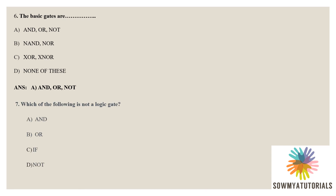Seventh question: which of the following is not a logic gate? The logic gates are AND, OR, and NOT. In the options, option C is not a logic gate. The correct answer is option C: IF is not a logic gate.